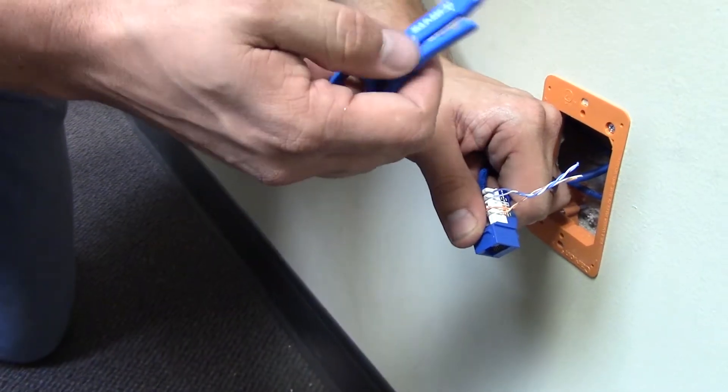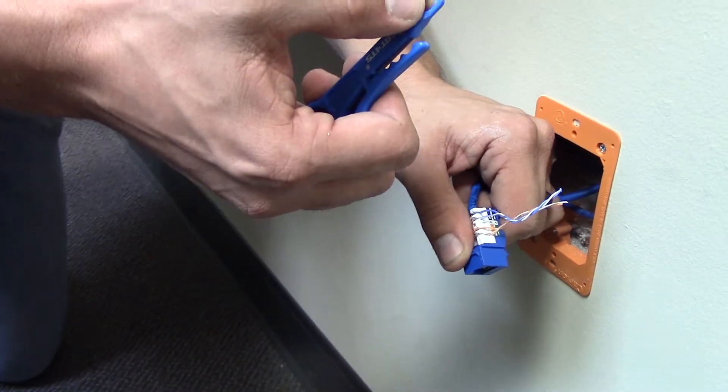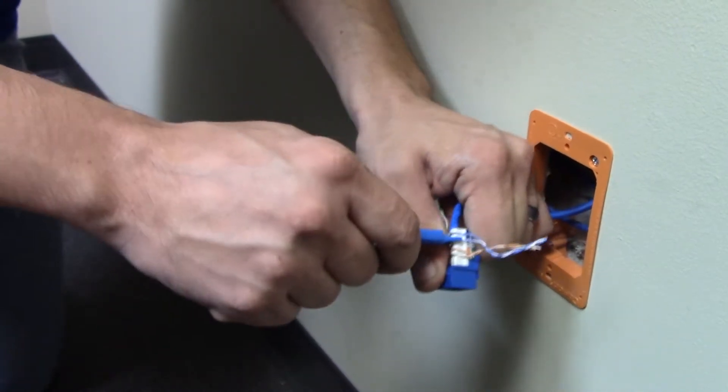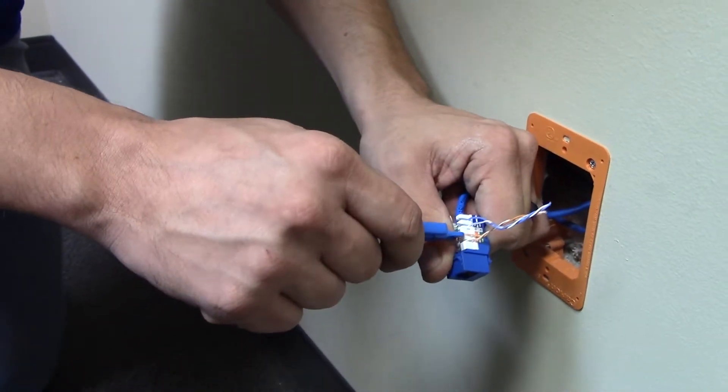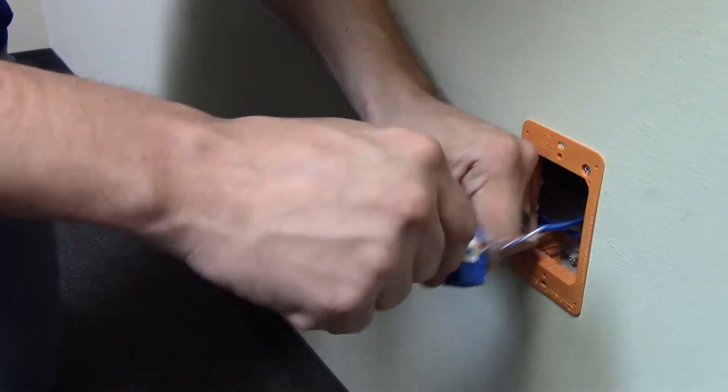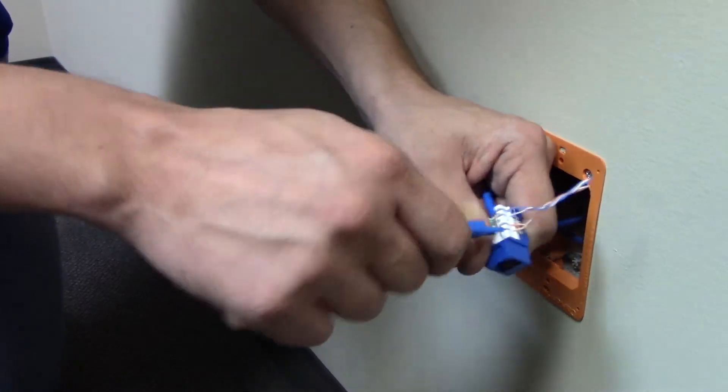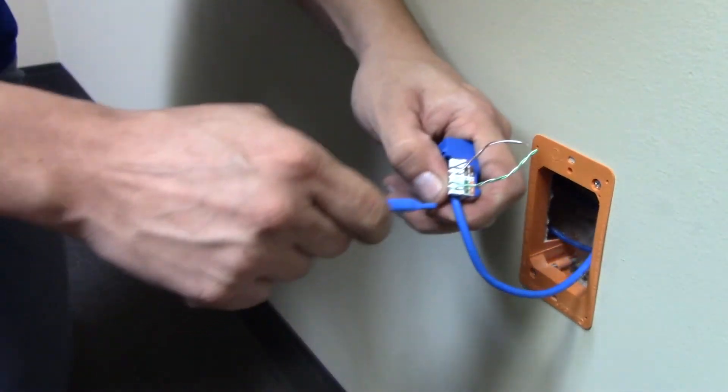So now we use the other piece of this termination tool which is the punch down piece. We use this to punch it down into the jack. You'll feel it tighten down in the teeth. I like to rock it a little bit to make sure it's securely snug in the bottom of the jack.